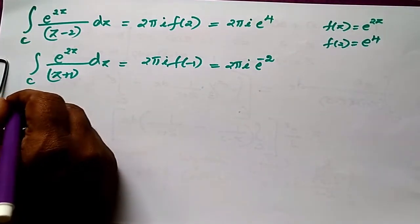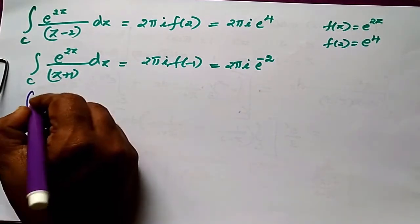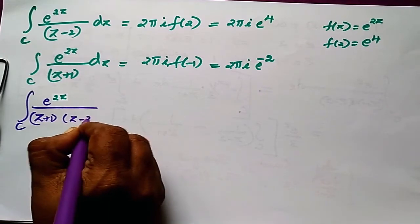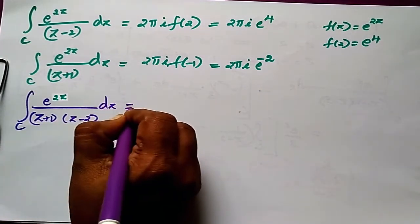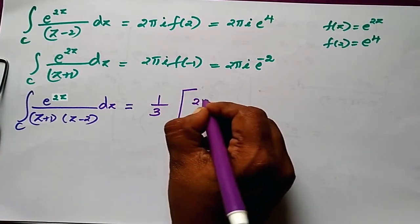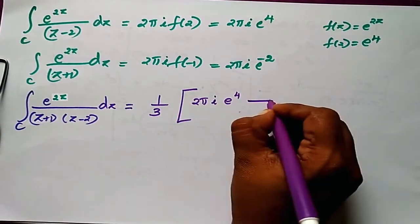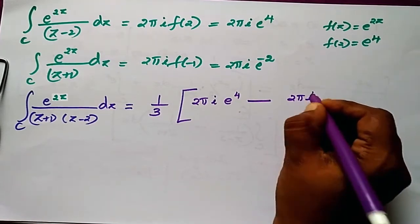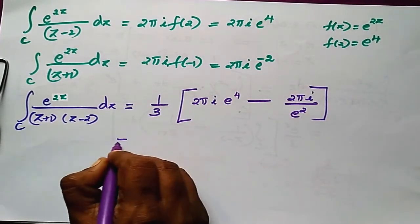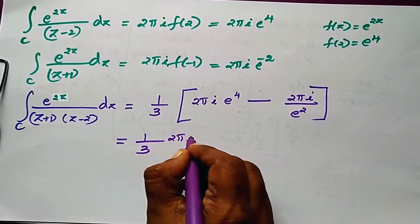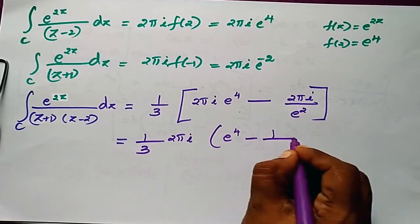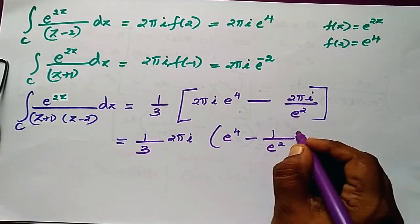Substituting back into the equation: integral c of e^(2z) / ((z+1)(z-2)) dz = (1/3) times (2πi · e^4 minus 2πi · e^(-2)), which simplifies to (1/3) · 2πi · (e^4 - 1/e^2).